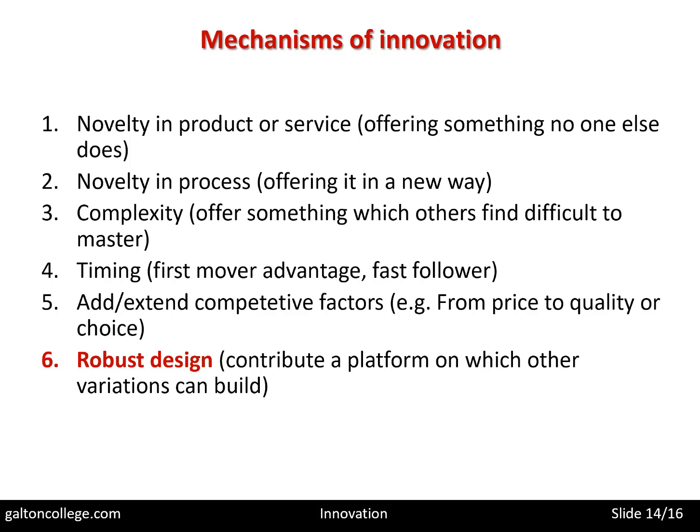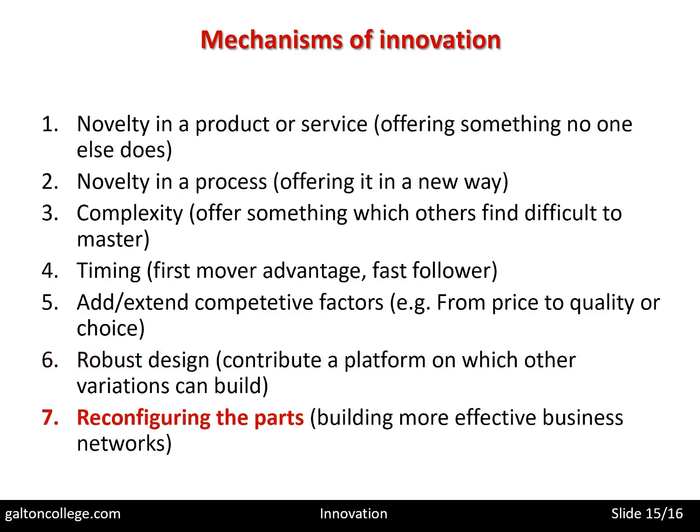So there are many aspects to that type of robust design. Companies may reconfigure the parts; they may build a more effective business network. They may, out of an innovative product, make new contacts and have new marketing channels. They may also look at the physical parts in the product and be able to reconfigure those parts into yet another product — so the company may produce some item of electronics, but by taking some components out they're able to produce a second item.